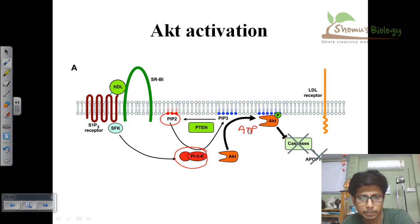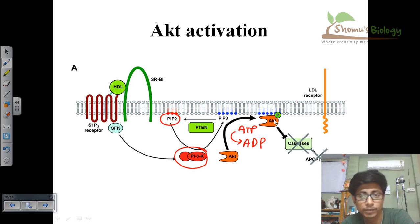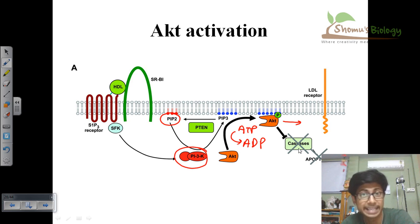For this phosphorylation, ATP is required because all kinase pathways require a phosphate donor, and ATP works as that phosphate donor. Once AKT is phosphorylated, it is active. It then carries out the processes for cell growth and proliferation and prevents apoptosis by blocking caspases and related proteins.